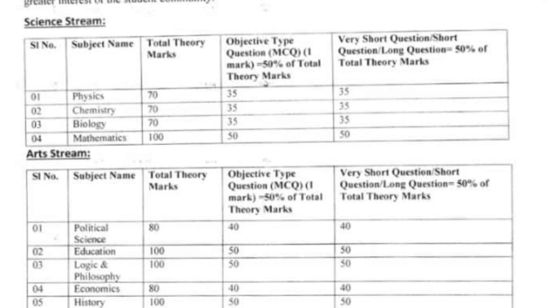For Mathematics, the total score is 100 marks. If you have 50 marks for MCQ and 50 marks for written, then you have to write the remaining 50 marks.